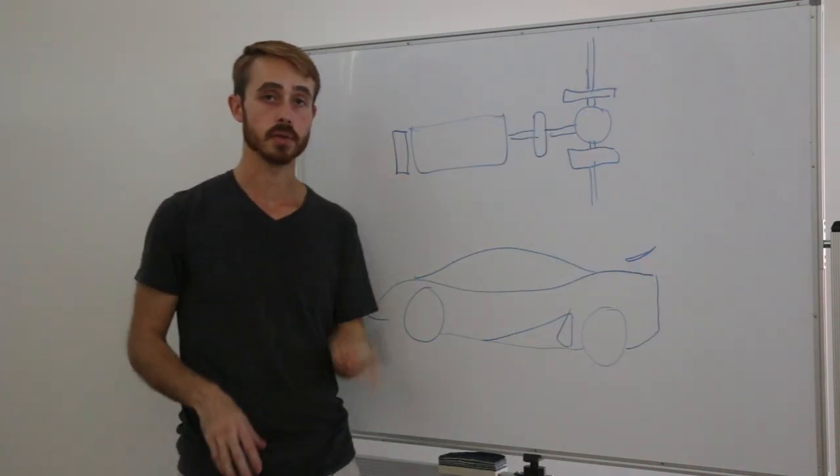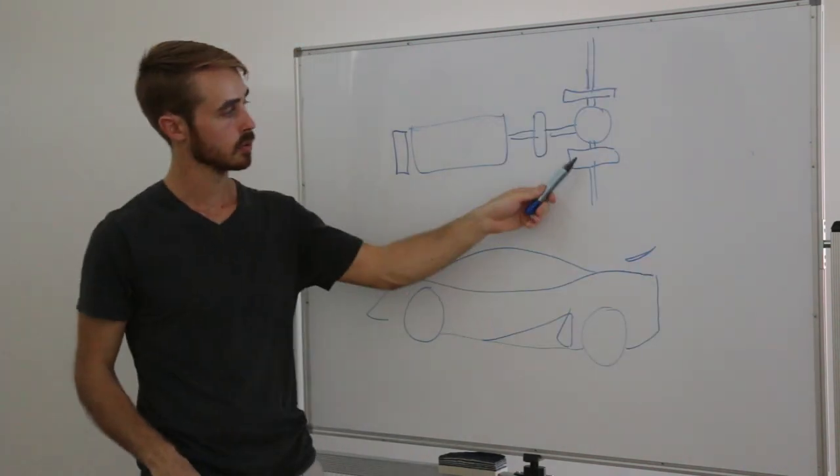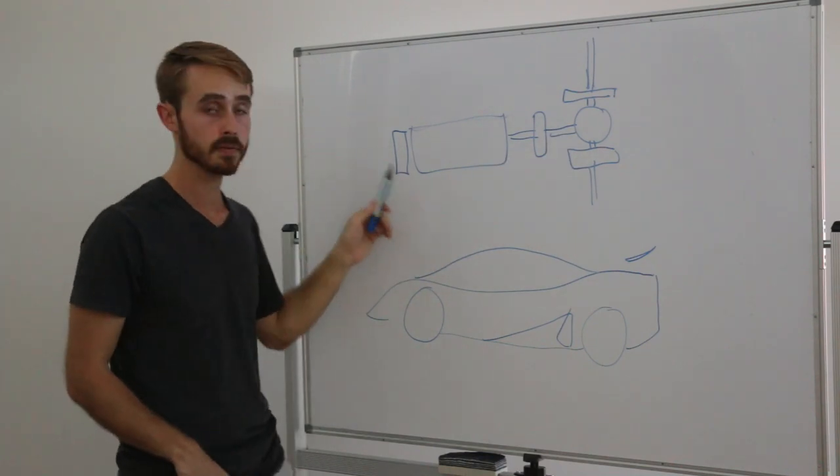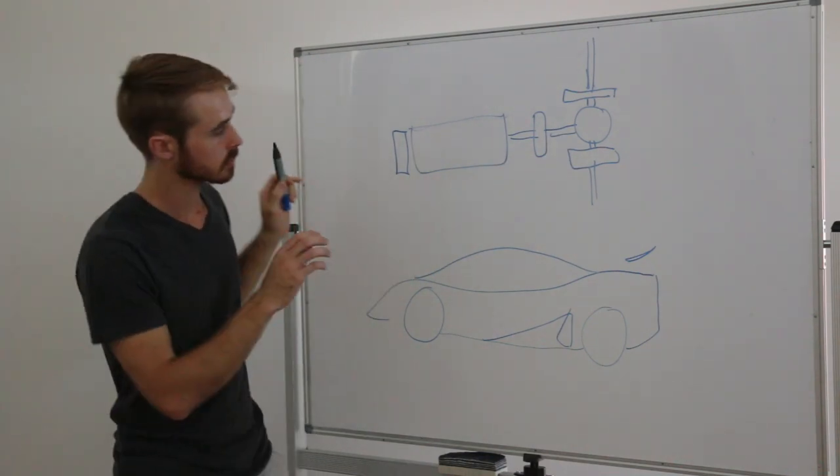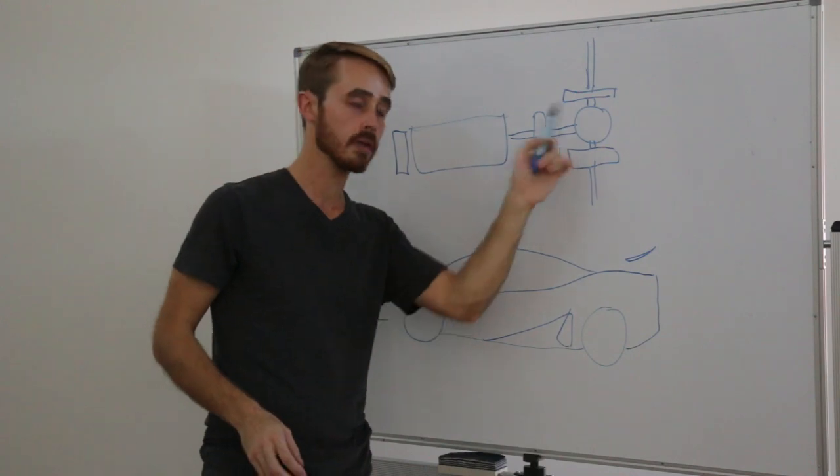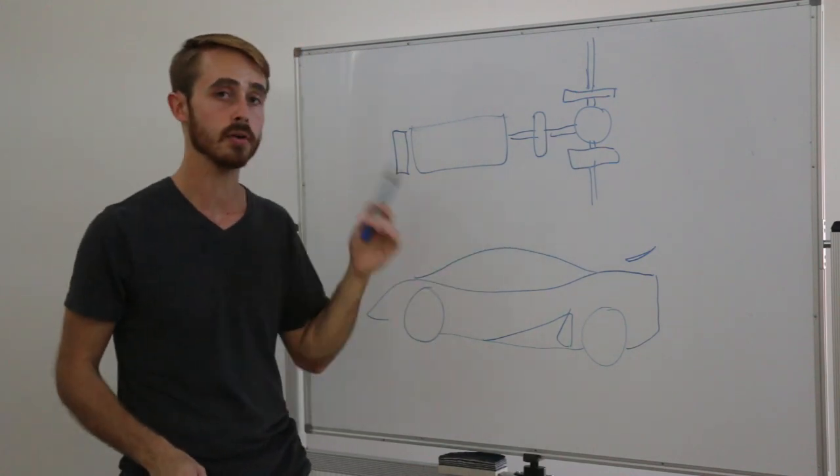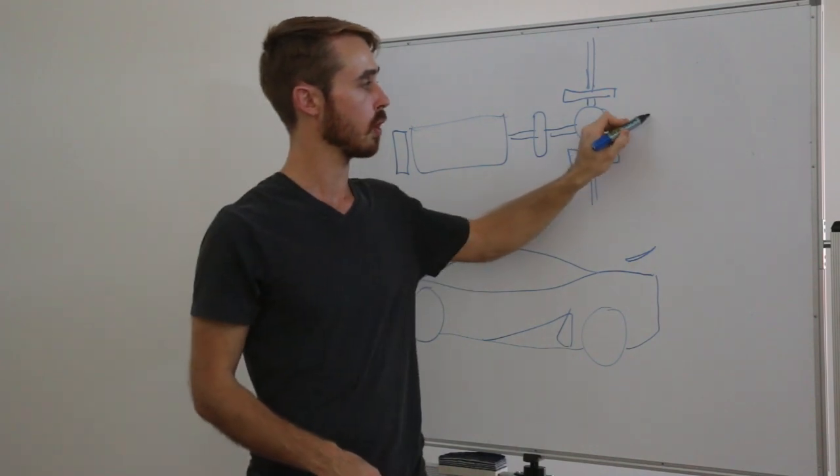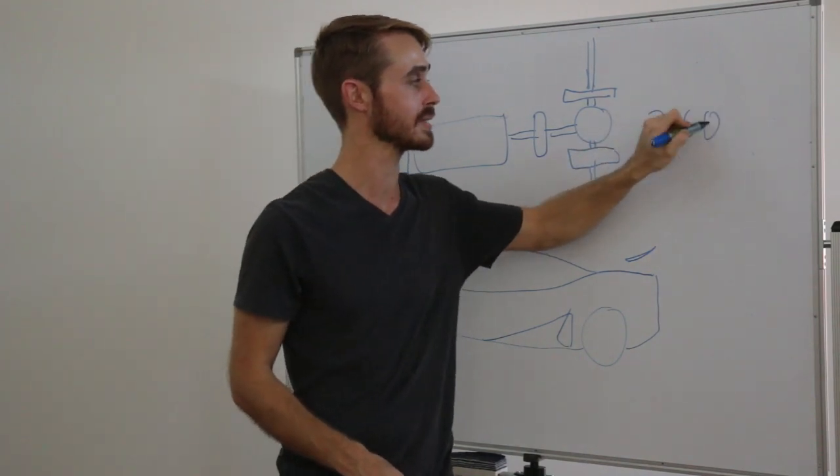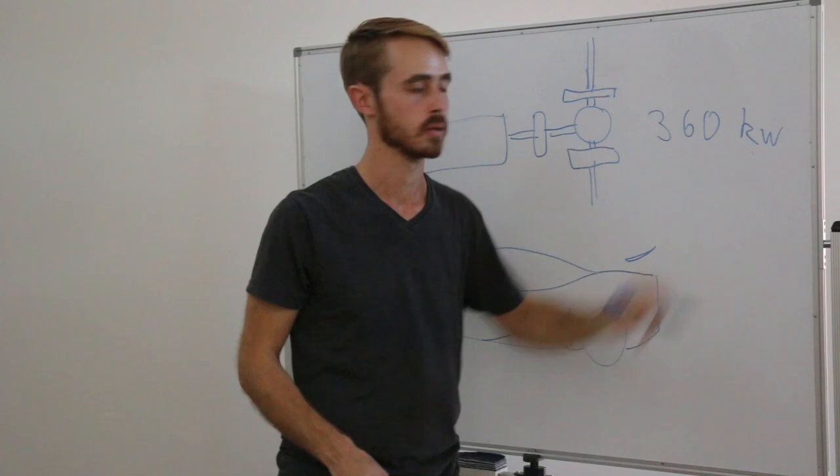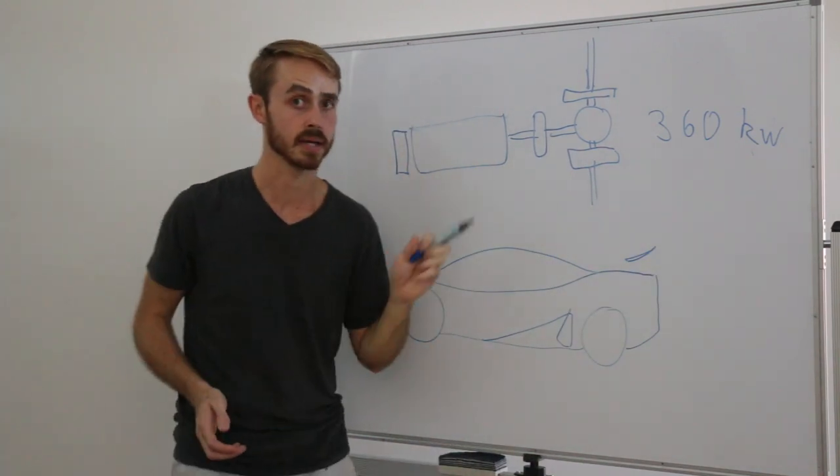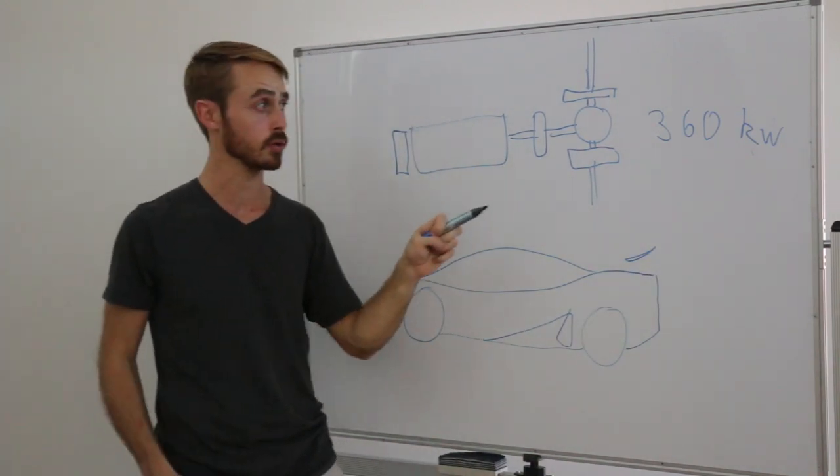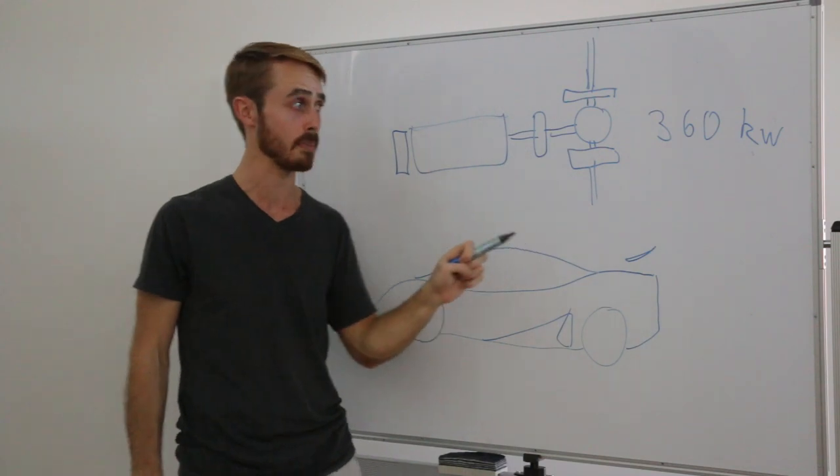As I mentioned earlier, the Regera has three electric motors. Two just to the rear, one to the front on the engine. If we look at just the power of these rear electric motors, they're quoted at 180 kilowatts each. So, this is a total power of 360 kilowatts. I don't know if any of you have driven a car with this sort of power, but I can assure you that it's very, very rapid by itself.